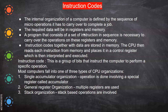The required data will be in registers and memory. Data is first in the main memory, then read one by one and placed in the respective internal registers, and operations are carried out. A program consists of a set of instructions in sequence necessary to carry out operations on these registers and memory. Instruction codes together with data are stored in memory. For example, if I want to store C = 45, C is the register and 45 is the data. The CPU then reads each instruction from memory and places it in the control register, which interprets and executes it.